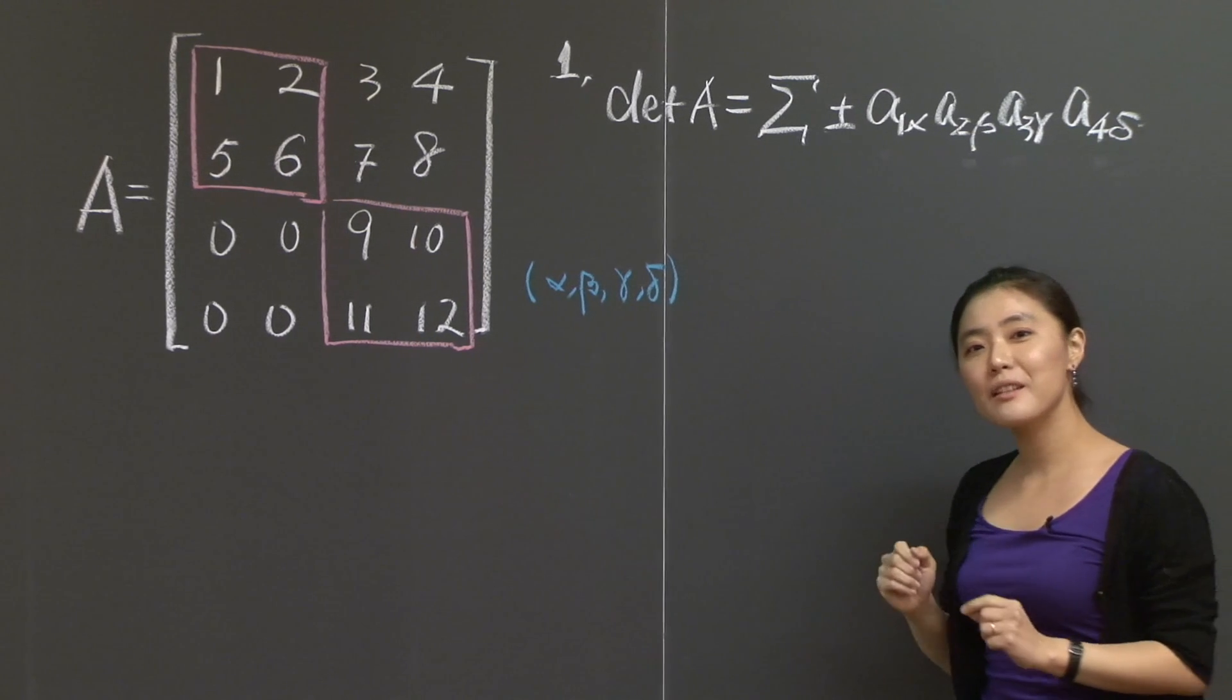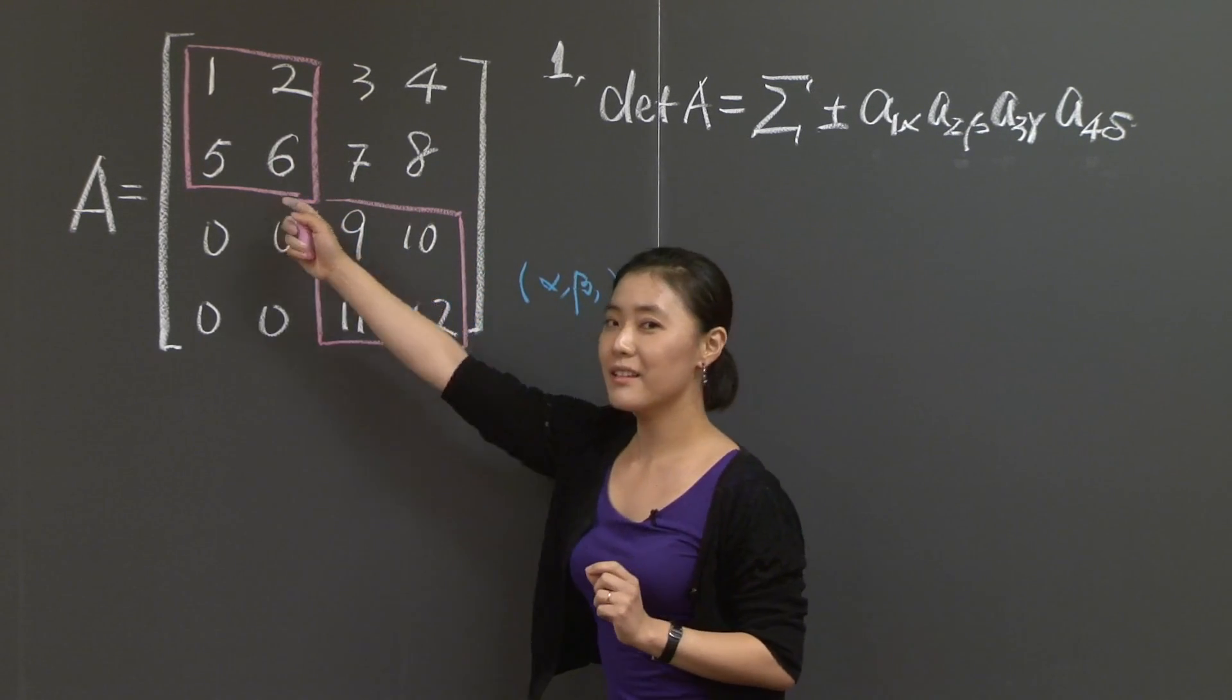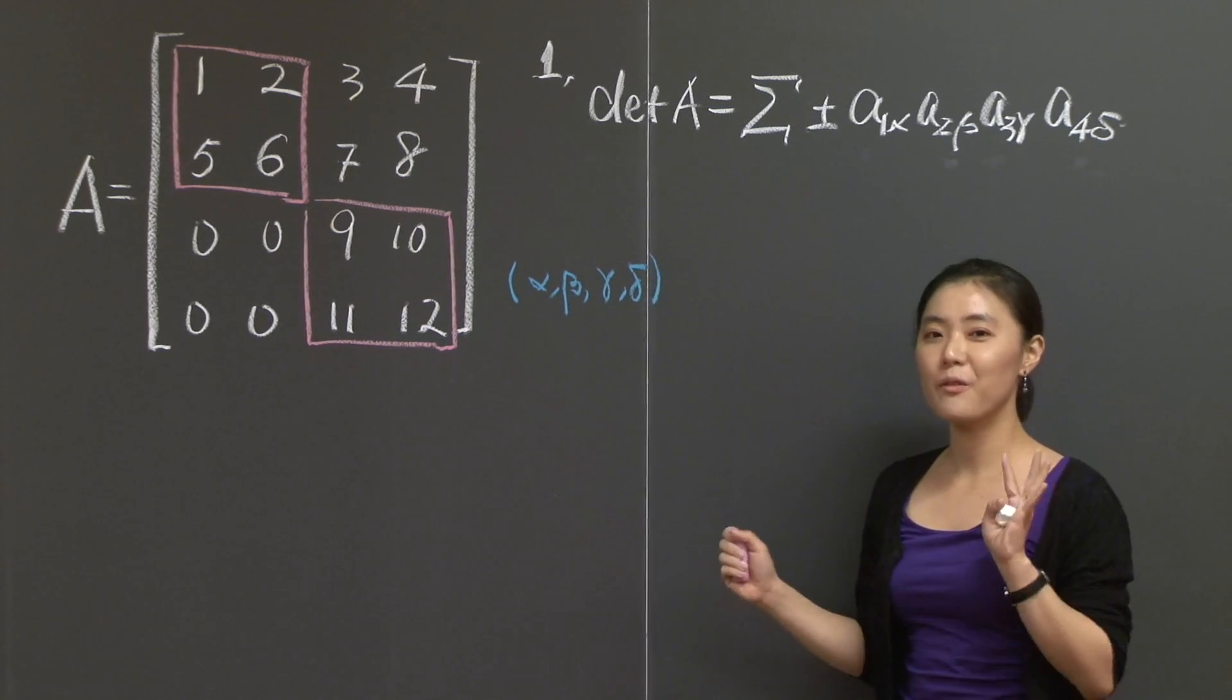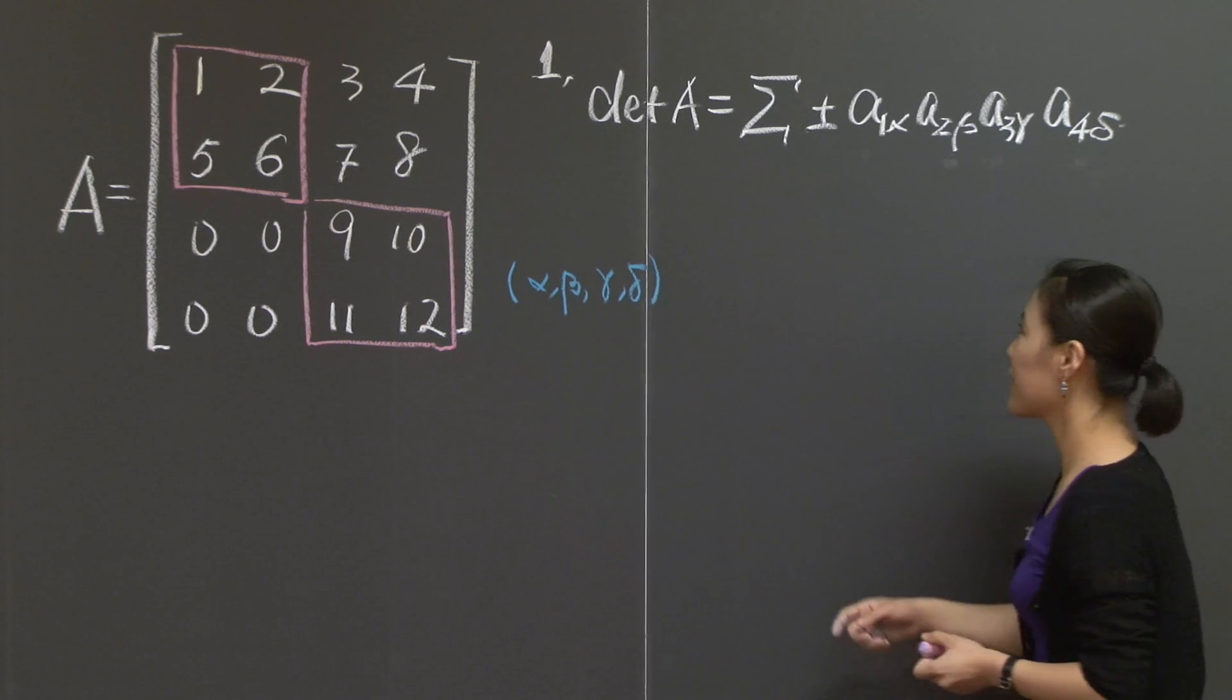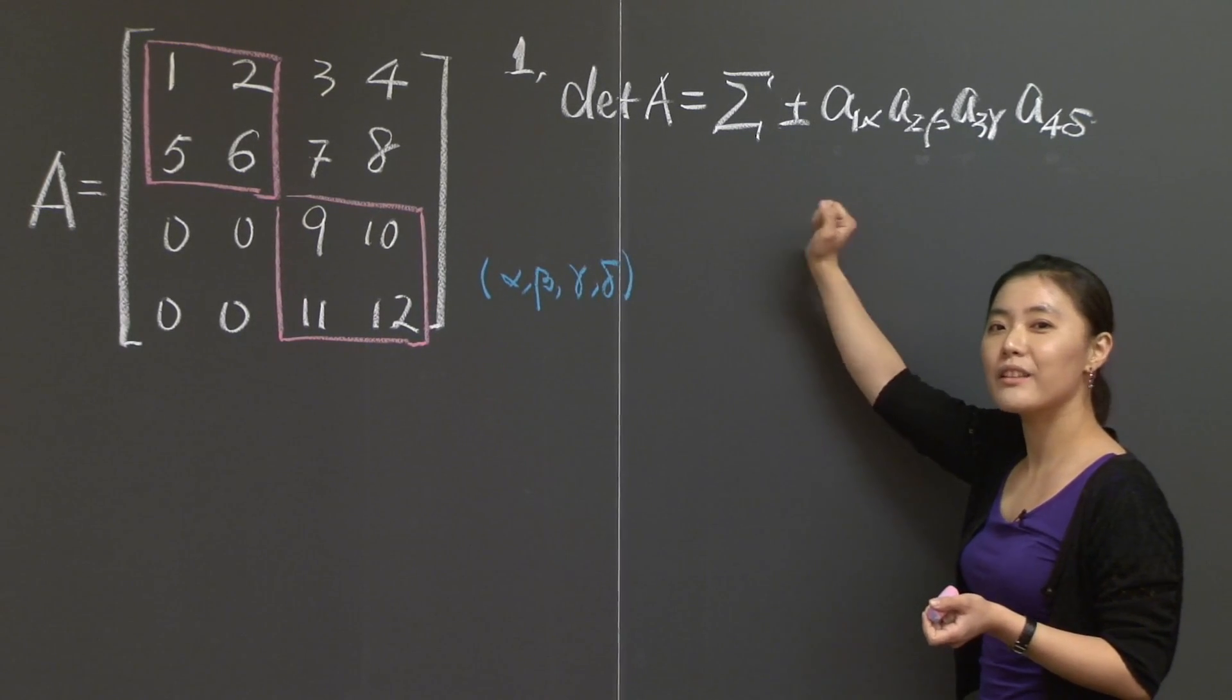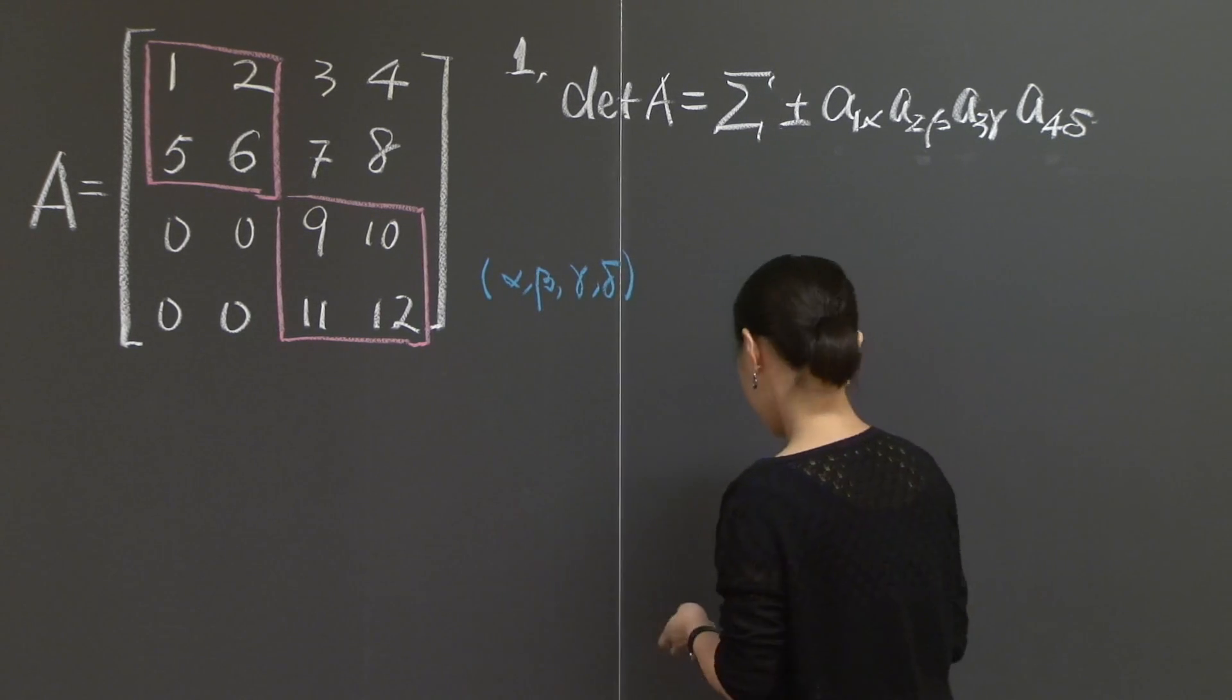Now if that's the case, what will happen to the first two entries? Since they all have to come from different columns, the choice of the first two entries can only be either 1-6 or 2-5. So how many terms am I talking about? Two possibilities here and two possibilities here, which comes to 4. Instead of computing 24 terms, you only need 4 terms here.